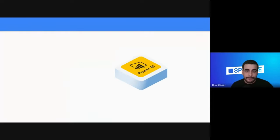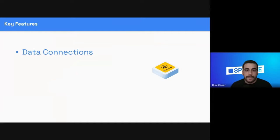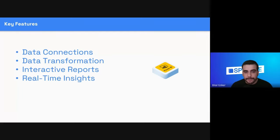Some key features of Power BI start with its data connections — it connects to a wide range of data sources including databases, cloud services, and online data sets. It allows you to transform your data with Power Query, so you can do any cleanups, extend it, and make it ready for your report. You can create interactive reports with an easy-to-use drag and drop interface to create visualizations like charts, graphs, maps, and tables.